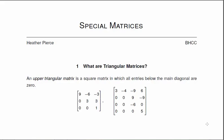An upper triangular matrix is a square matrix in which all the entries below the main diagonal are zero. So here are two examples. You can see here's the main diagonal, and everything below it is zero. So we have this upper triangle. Same thing with this one. Everything below the diagonal is zero.